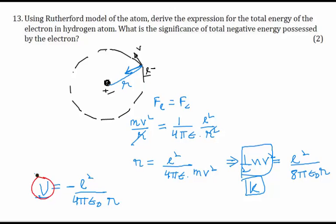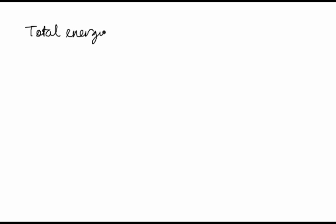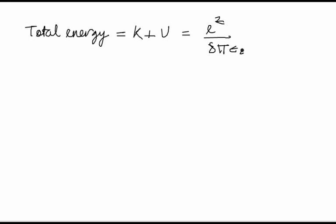We have calculated one energy as electrostatic potential energy and the other as kinetic energy. Now the total energy will be the addition of the two. The total energy equals kinetic energy plus electrostatic potential energy, which equals e²/(8πε₀r) plus [−e²/(4πε₀r)].